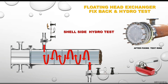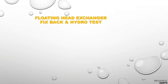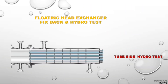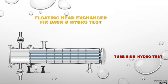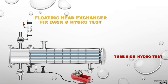Once the test pressure is reached, call the inspection team for clearance. After getting inspection clearance, the next activity is the tube side hydrotest. For tube side hydrotest, first remove the test ring, then fix the floating head in that area, then fix the channel cover. Properly set the gasket and tighten all bolts before pressurizing.